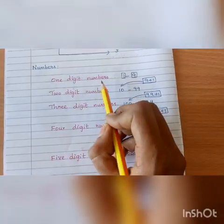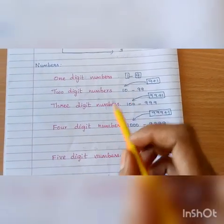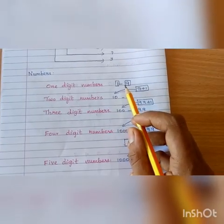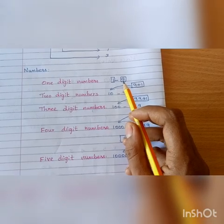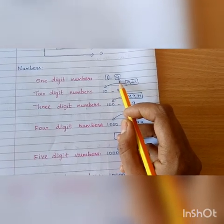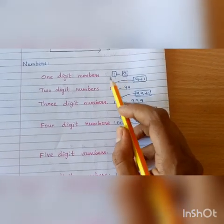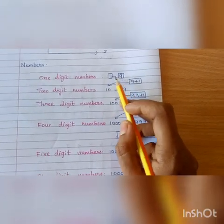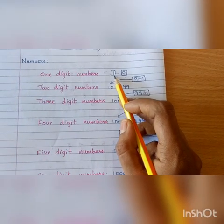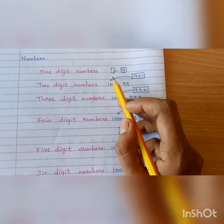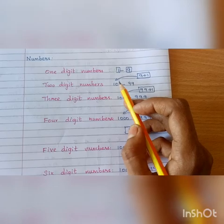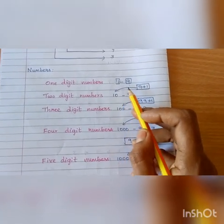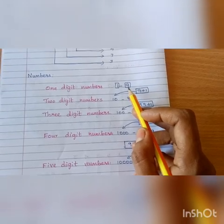Let me start with one-digit numbers. As we already know, one-digit numbers are 1, 2, 3, 4, 5, 6, 7, 8, 9. In this, 9 is the greatest number and 1 is the smallest number. So, the smallest one-digit number is 1 and the greatest one-digit number is 9.